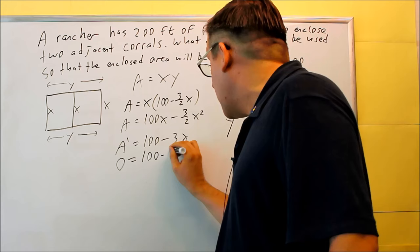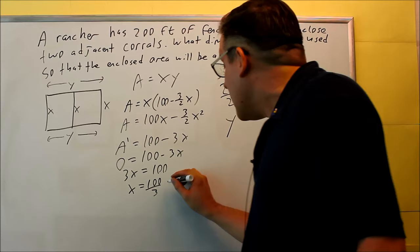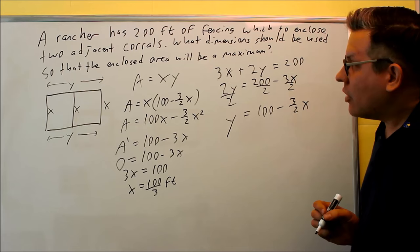I'm going to set it equal to zero. So, zero equals 100 minus 3x. 3x equals 100. So, my x is going to equal 100 over 3. And we're talking about feet here. 100 thirds is going to be the first dimension.